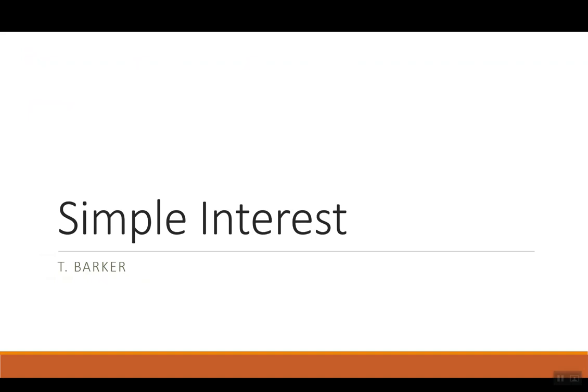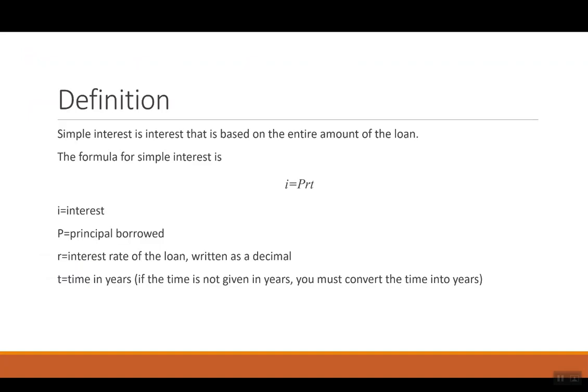Today we're going to look at simple interest. Simple interest is interest that is based on the entire amount of the loan. The formula we will use for simple interest is I equals PRT. Here I stands for interest, P will stand for the principal that you borrowed or invested, R is the rate of interest of the loan and you want to always write this R as a decimal, and then T will be time in years. If the time is not given in years, say I give it in months or in days, then you need to convert it over to years.